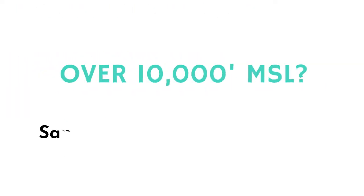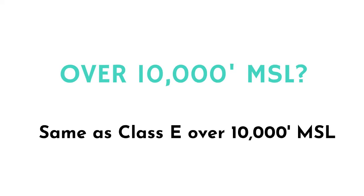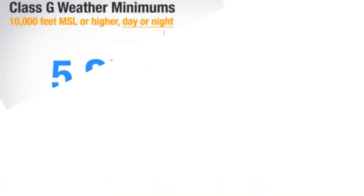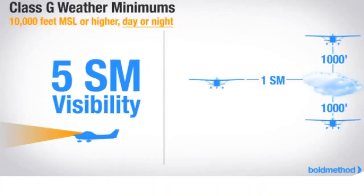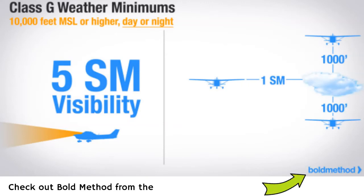What are the weather minimums in Class Golf over 10,000 MSL? They're the same as Class Echo over 10,000 MSL, unless of course you're under 1,200 feet AGL. If you remember from the last lesson, we need five statute miles visibility, 1,000 feet below the clouds, one statute mile away from the sides, and 1,000 feet from the tops.